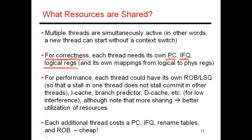Each thread will also need its own set of logical or architected registers, because every thread believes it has access to 32 registers named in the program's binary — R1 through R32. So every thread needs those 32 registers allocated in the register file, plus some extra registers for renaming and bringing new instructions into the pipeline. Likewise, every thread will also need its own mappings from logical to physical registers — its own program counter, instruction fetch queue, and rename tables to track its speculative and committed map tables. For performance, you might also want to separate the reorder buffer and the load-store queue for each thread.